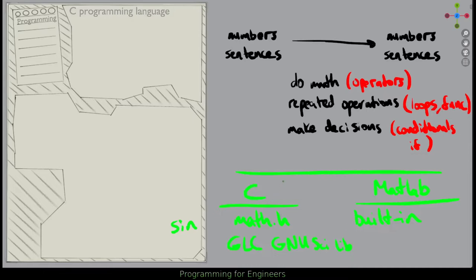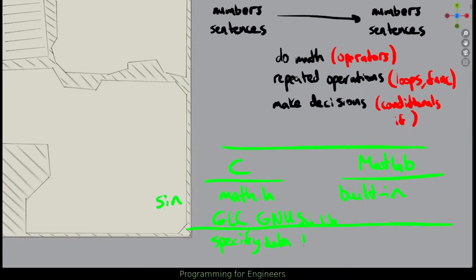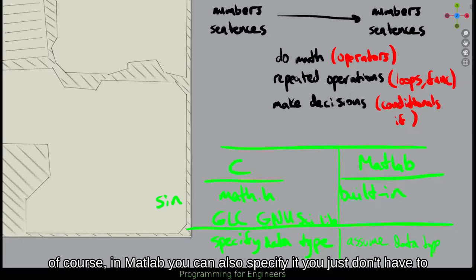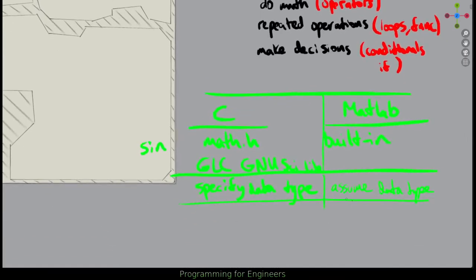In C you also have to specify data types, whereas in MATLAB it will assume the data type. When you type 1.0 in MATLAB, it knows that's the double class type. If you type it in C, you have to specify that you want it to be a double. Working with matrices, they're built in to MATLAB. In C it's a much more complicated process — matrix multiplication and element-by-element multiplication are complex. If you really want to use matrices a lot, C often wouldn't be your best choice.